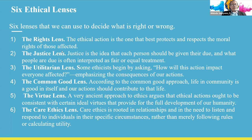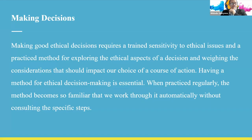There are six ethical lenses you can use to decide what is wrong and what is right. The first one is the rights lens, the second is the justice lens, the third is the utilitarian lens, the fourth is the common good lens, the fifth is the virtue lens, and the sixth is the care ethics lens. I will discuss these when we go through the examples in the textbook.